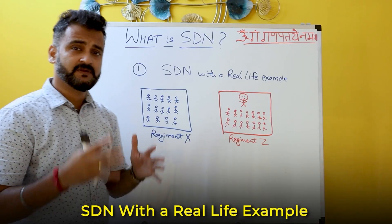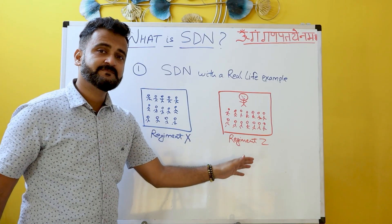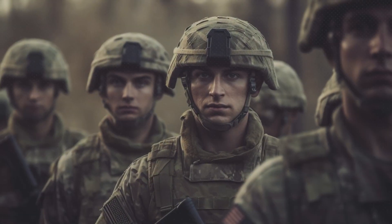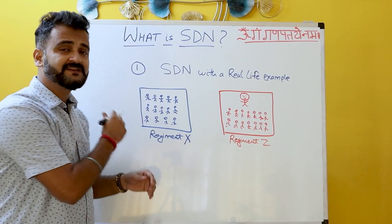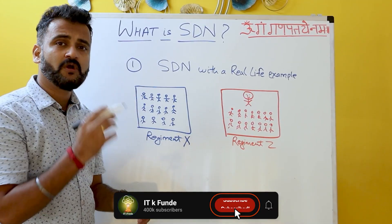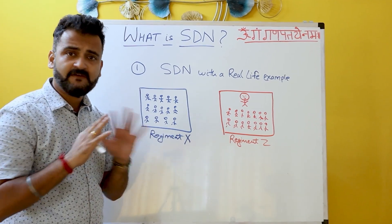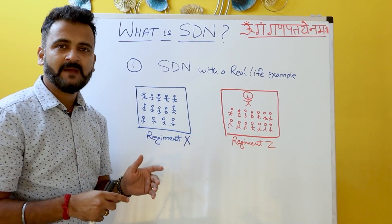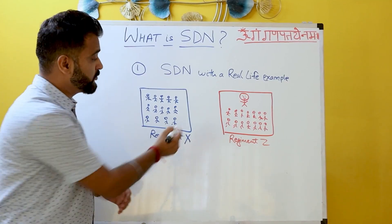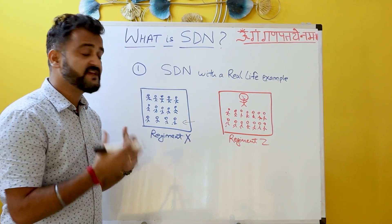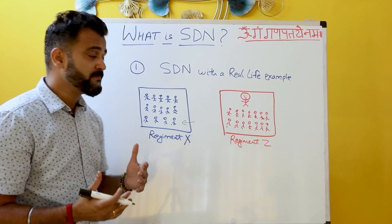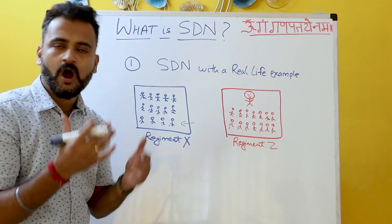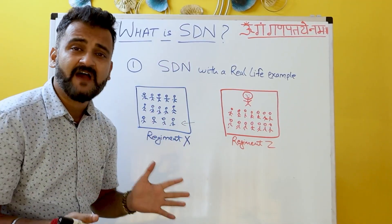So let's take a real-life example. On my left is Regiment X and on my right is Regiment Z. Regiment X is full of good soldiers with all the ammunition, the brains, the tactics — everything. But every soldier is working independently. They need to be told what to do. What is missing is there is no one to coordinate or command these soldiers, which leads to lack of coordination. It takes time to deploy a new soldier because there is no supervision, and a lot of time is spent planning tactics instead of just firing bullets.